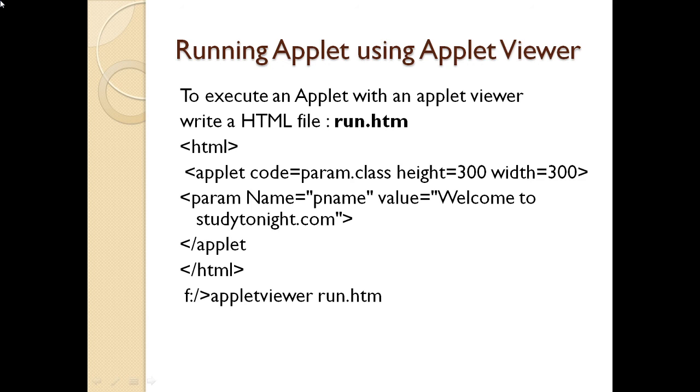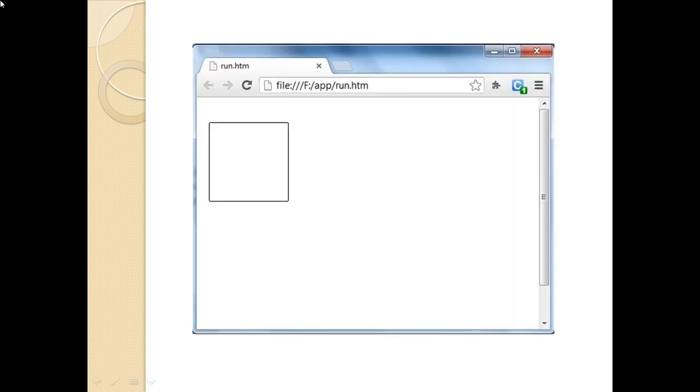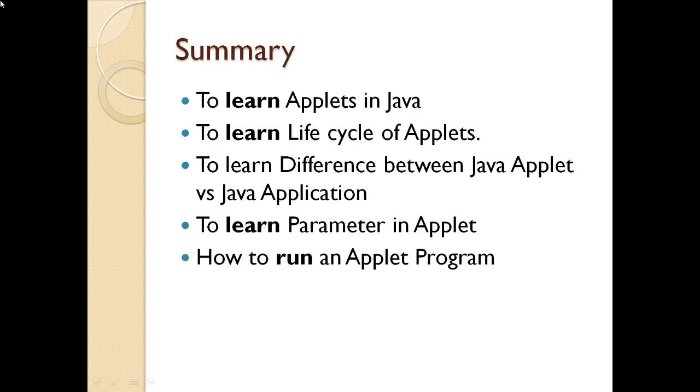Now, to summarize with today's lecture, we have seen what are applets in Java. We also saw the life cycle of applet. We saw the difference between Java applet and Java application. We saw the parameters in applet, that is a param pname, the value of that and how do you write it in the HTML code. Then finally, we saw how do you run an applet.